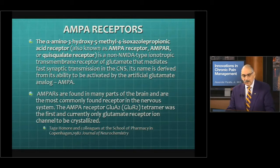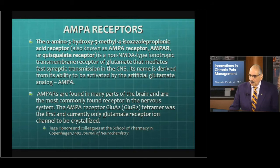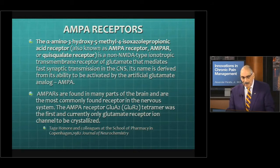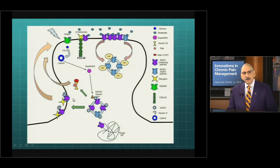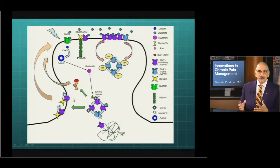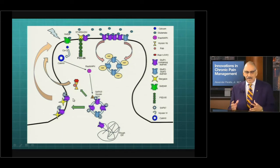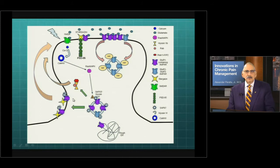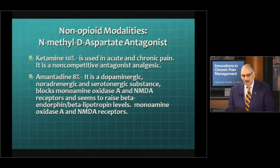They also have an effect on what we call the AMPA receptors, which has the very long name of alpha-amino-3-hydroxy-5-methyl-4-isoxazolepropionic acid receptor, also known as the AMPA receptor — and also AMPARS, which are part of these receptor systems. It's a very complex type of system of how drugs work, how they affect certain receptors, and how they help relieve pain. This is part of the neurobiology and neuroplasticity associated with pain management.